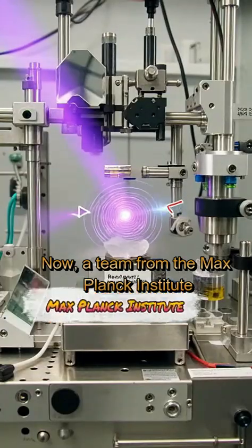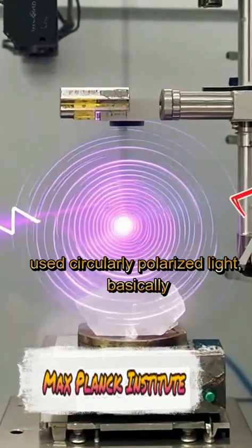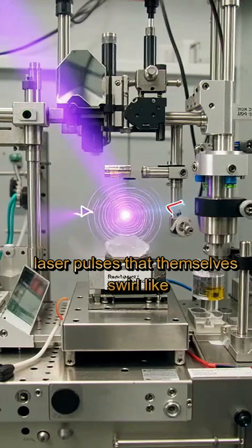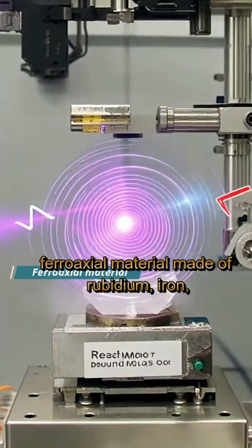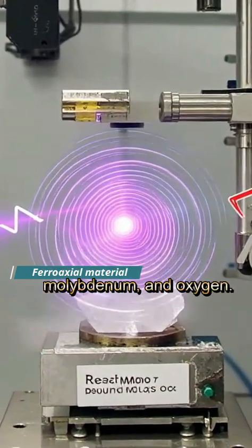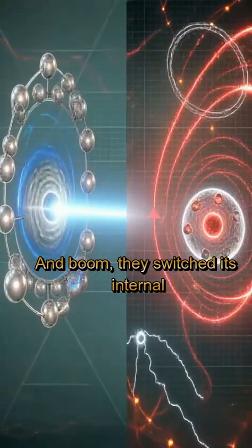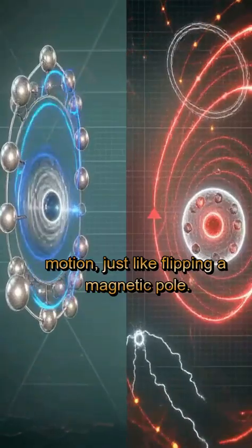a team from the Max Planck Institute used circularly polarized light. Basically, laser pulses that themselves swirl like tiny tornadoes to twist the atoms inside a ferroaxial material made of rubidium, iron, molybdenum and oxygen. And boom, they switched its internal motion just like flipping a magnetic pole.